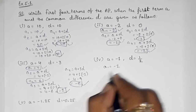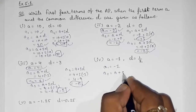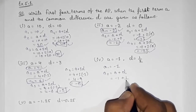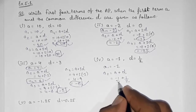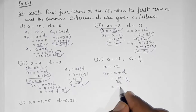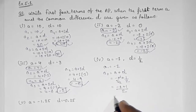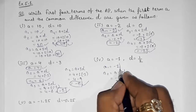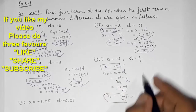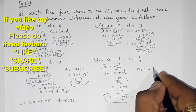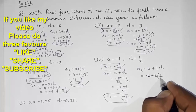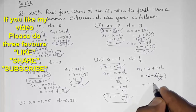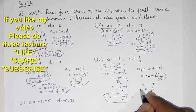For a = -1 and d = 1/2: a2 = a + d = -1 + 1/2. We find the LCM, giving (-2 + 1)/2 = -1/2. So our second term is -1/2. For a3 = a + 2d = -1 + 2×(1/2), the 2 cancels, giving -1 + 1 = 0. So our third term is 0.